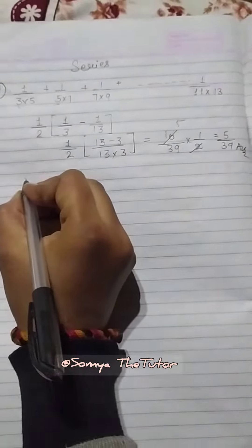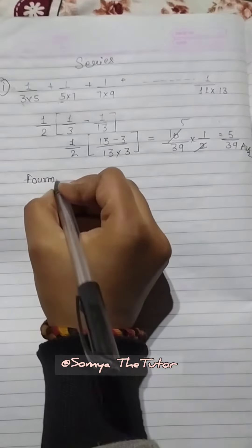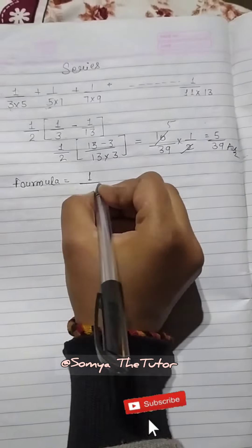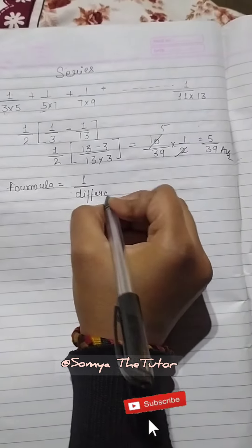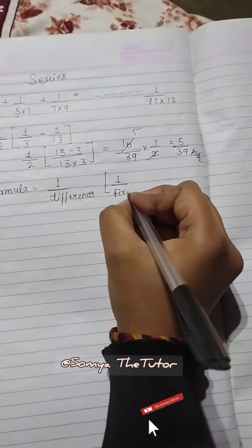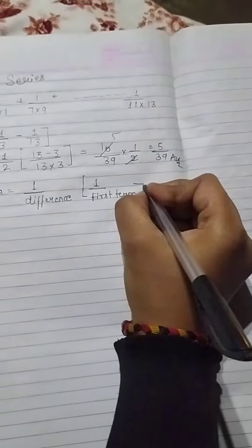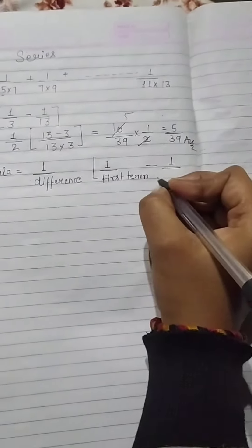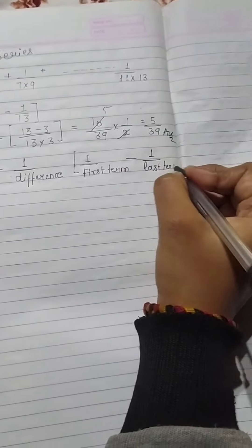So, this will be our formula. First, the difference is 1 upon difference. In the bracket, 1 upon first term minus 1 upon last term.